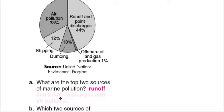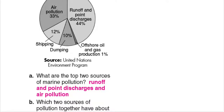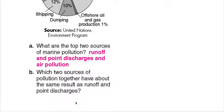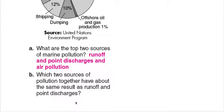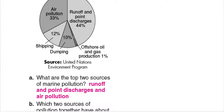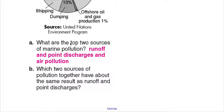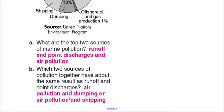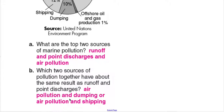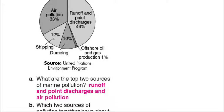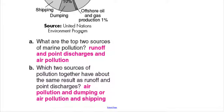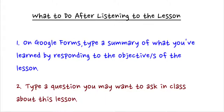So the top sources are runoff and point discharges and air pollution. Which two sources together have about the same result as runoff and point discharges? Runoff and point discharges is 44%. Dumping and air pollution would give about 43%, which is close. Alternatively, air pollution and shipping — 33% plus 12% — gives 45%, which is also close to 44%. So air pollution and dumping, or air pollution and shipping, are both valid answers.